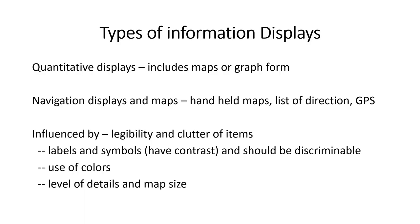The point we left in the last class was navigational and quantitative displays and how legibility and clutter can influence them. Since we are looking mostly at visual displays, now is a good time to discuss the human visual system. I will briefly describe the human visual system so that you understand what it comprises, its capabilities, and its limitations. The visual sensory organ available to humans is called the eye.